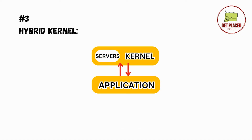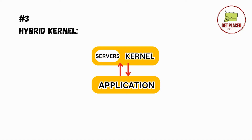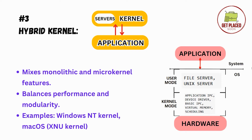The next type is hybrid kernel, which is what we see most commonly — Windows and Apple's macOS both use hybrid kernel. Hybrid kernel is a mix of monolithic kernel and microkernel. The servers (user mode components) are placed back into the kernel — it moves out the drivers but keeps the system servers inside the kernel. In the architecture, you can see the file server and unique server are placed inside the kernel.